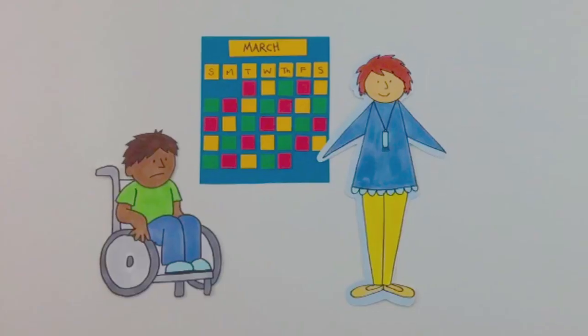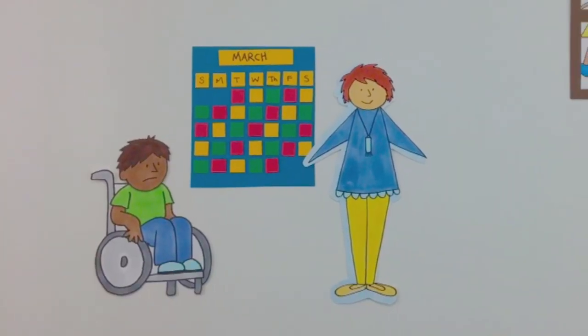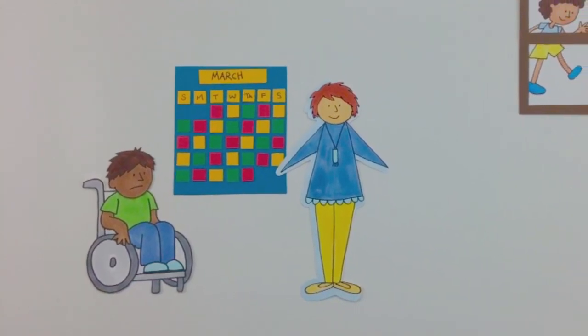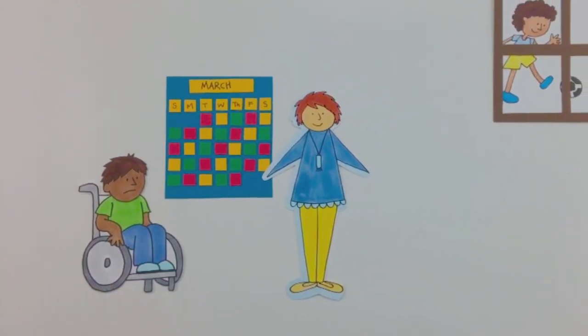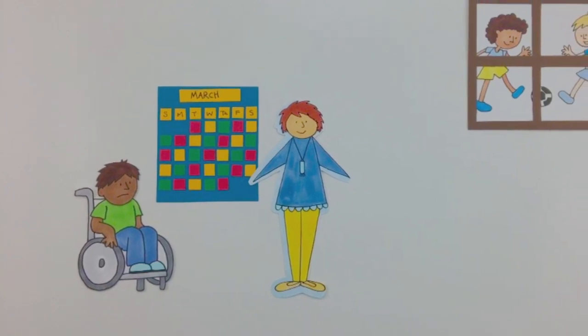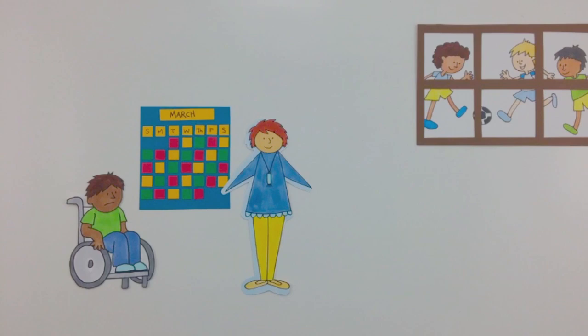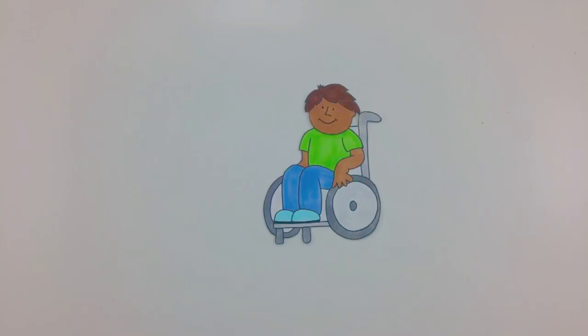Last month, she was trying to get Tony to engage with his calendar routine. She noticed that instead of paying attention to the calendar, Tony's eyes were drifting out the window to a class that was playing soccer. She saw this as an opportunity for Tony to interact more with his peers. Alex took Tony out to watch the rest of the game. He loved it.